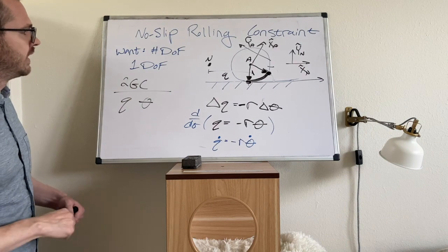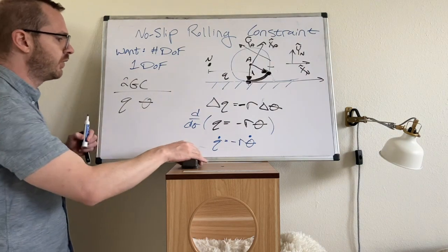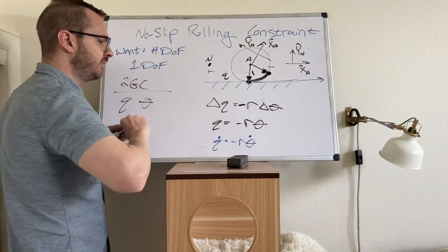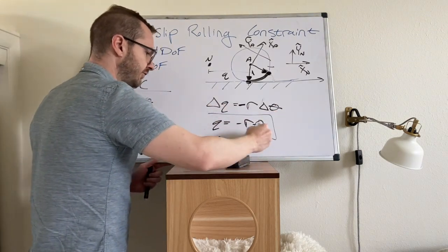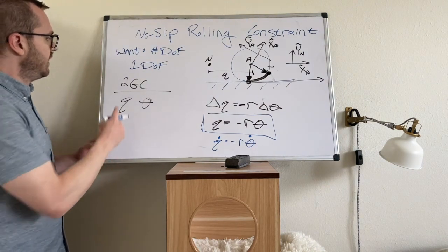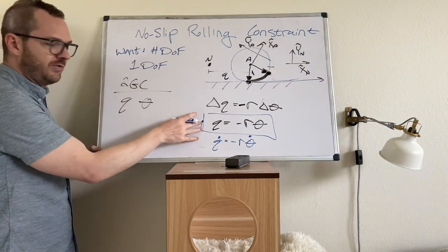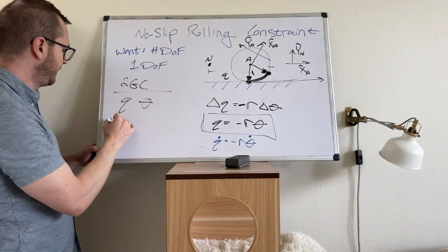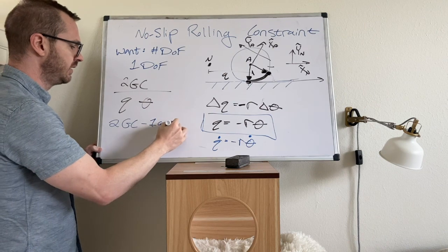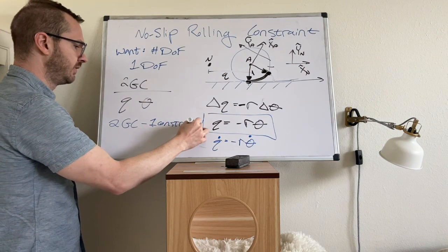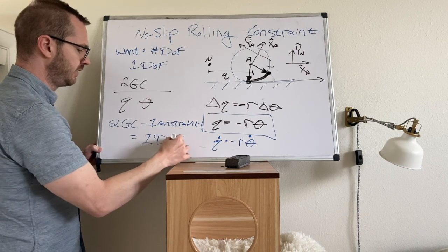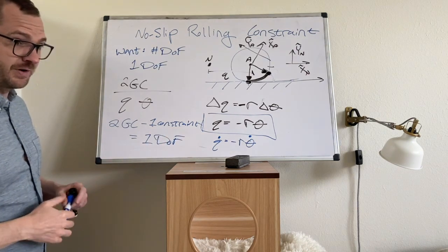So for the problems we're working right now, what do I need you to do? I would just need you to come up with this position level constraint equation. That's it. So we've listed the generalized coordinates. We've derived the constraints. We would say that two generalized coordinates minus the one constraint and, of course, equals one degree of freedom.